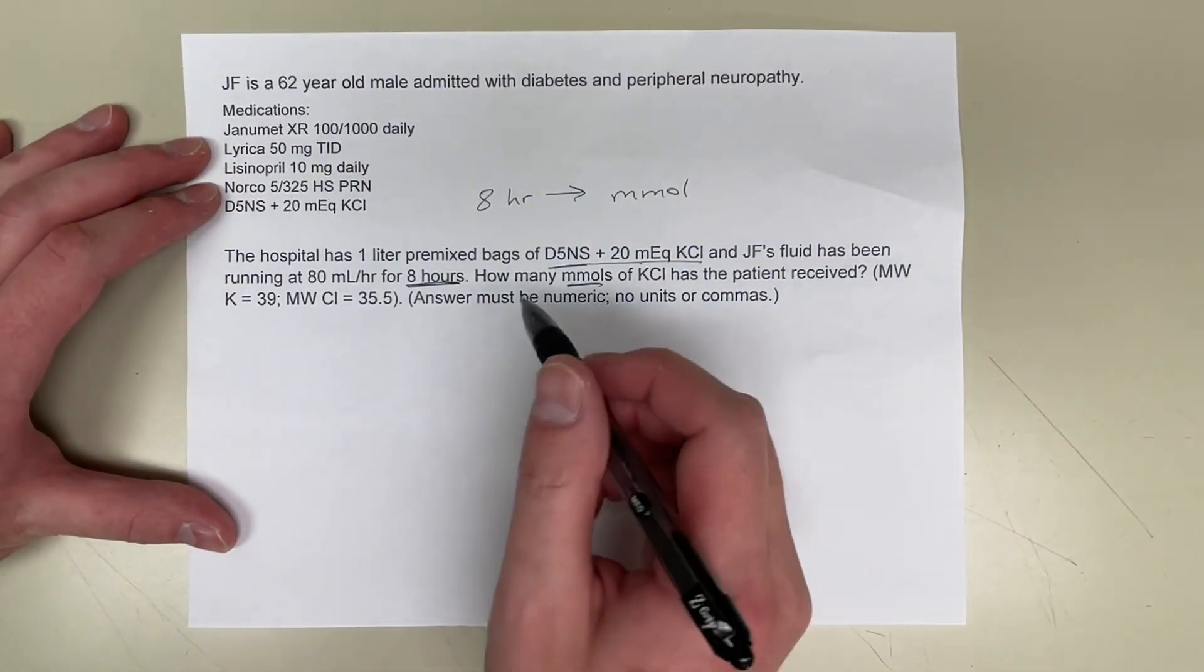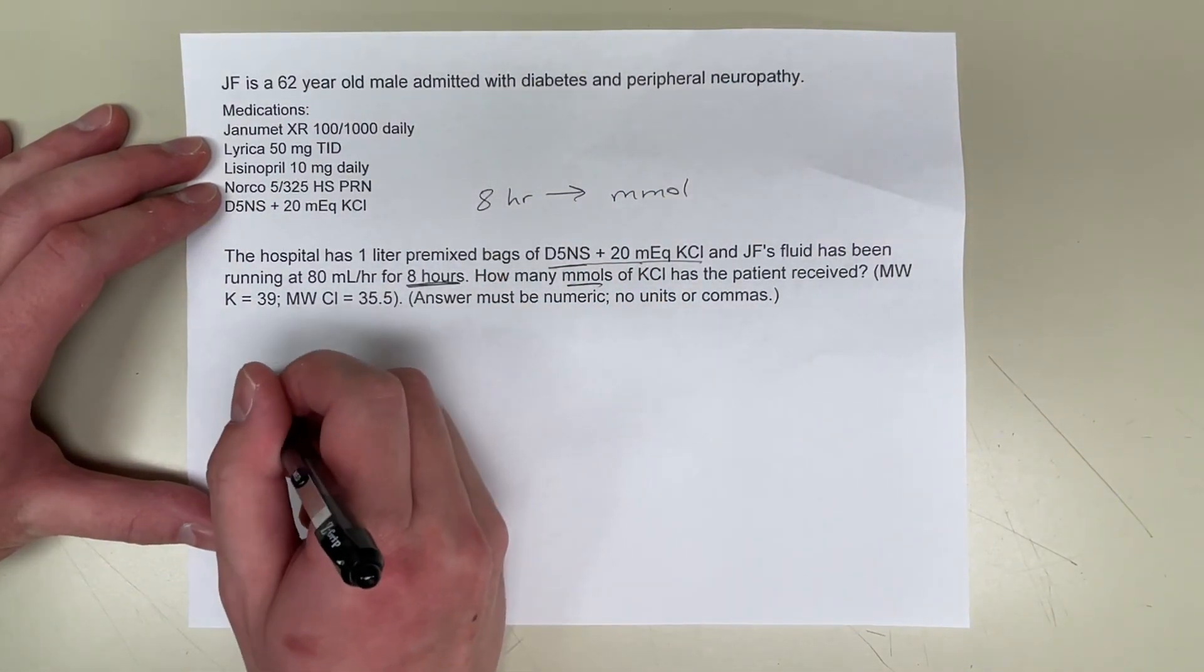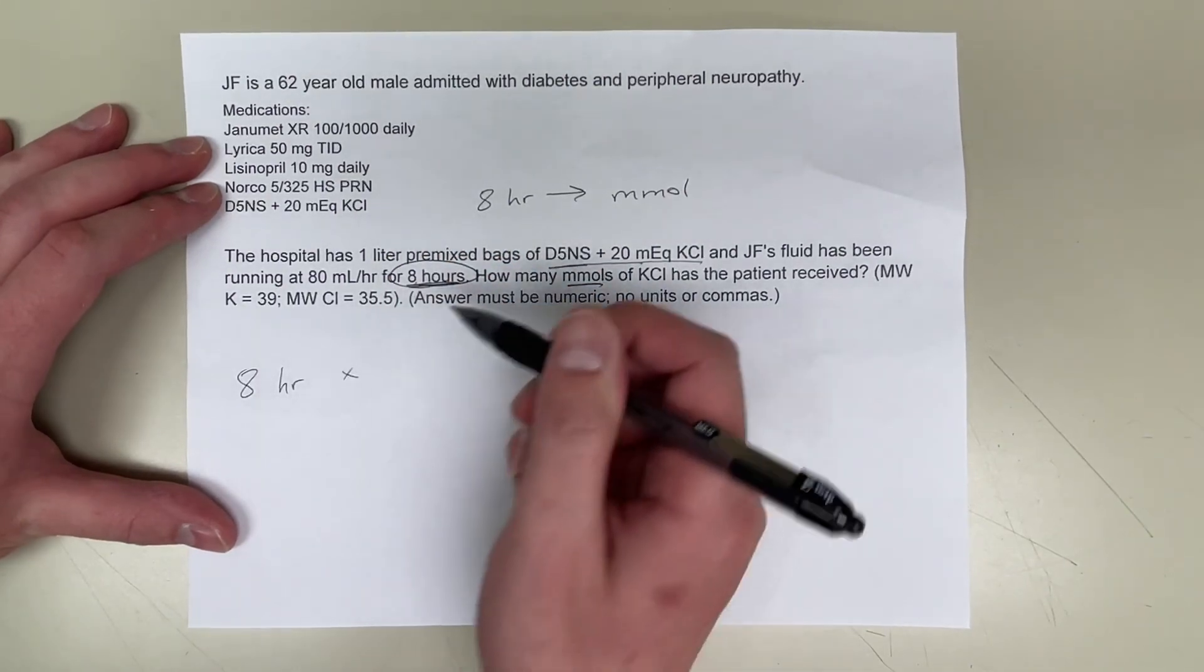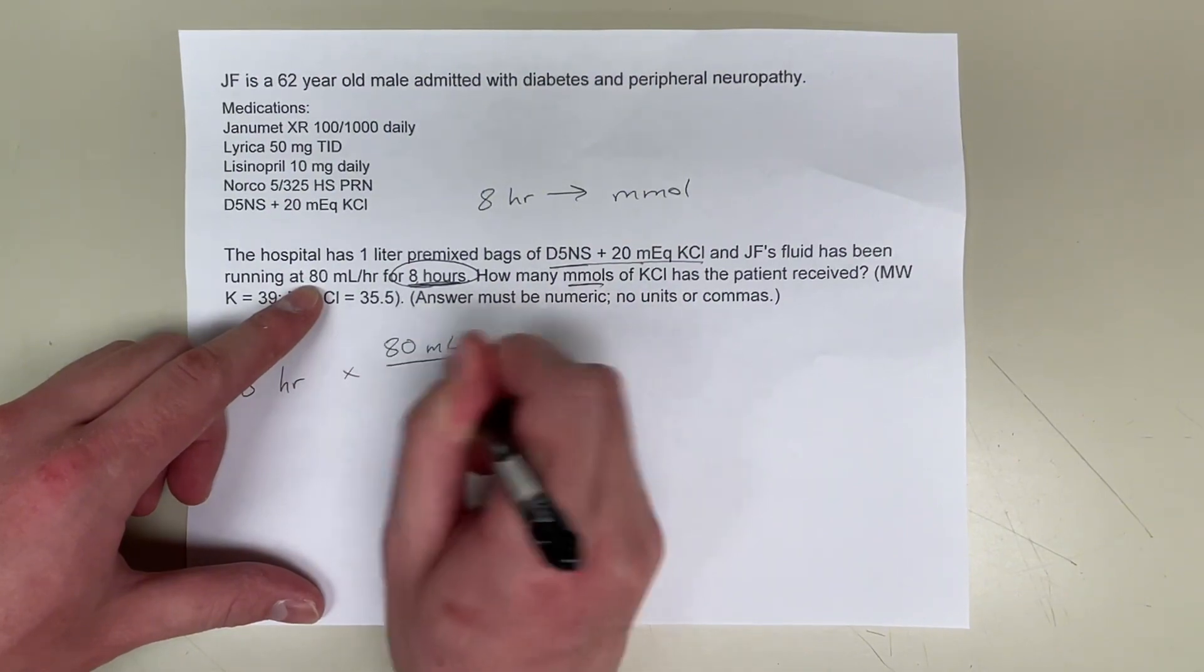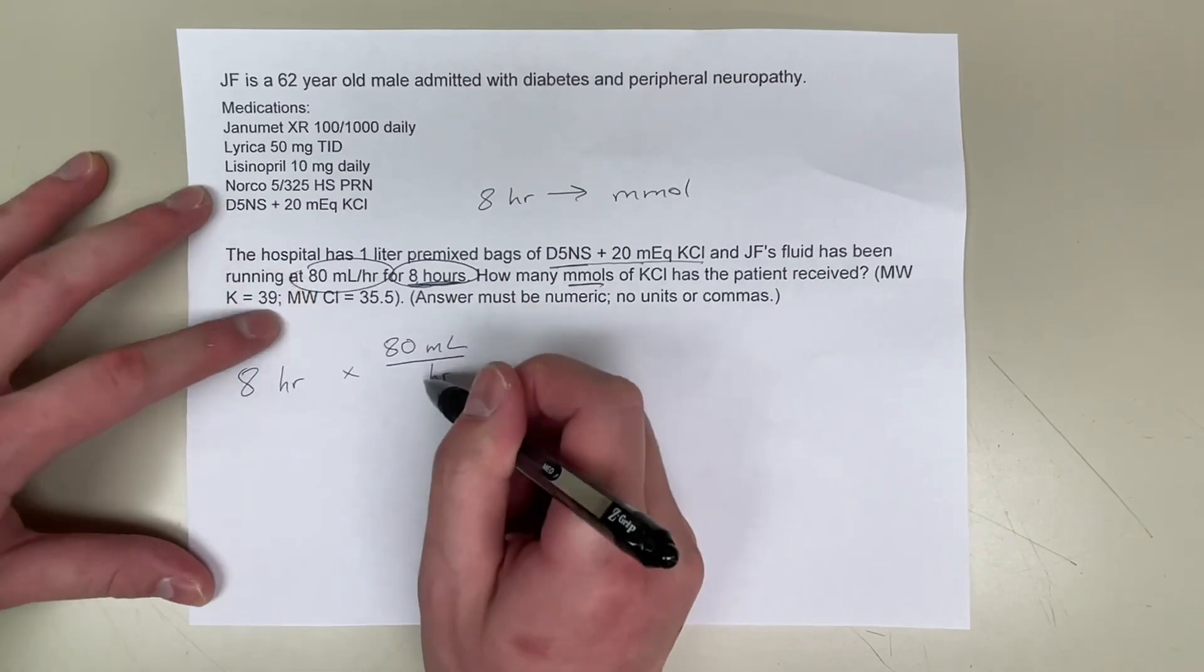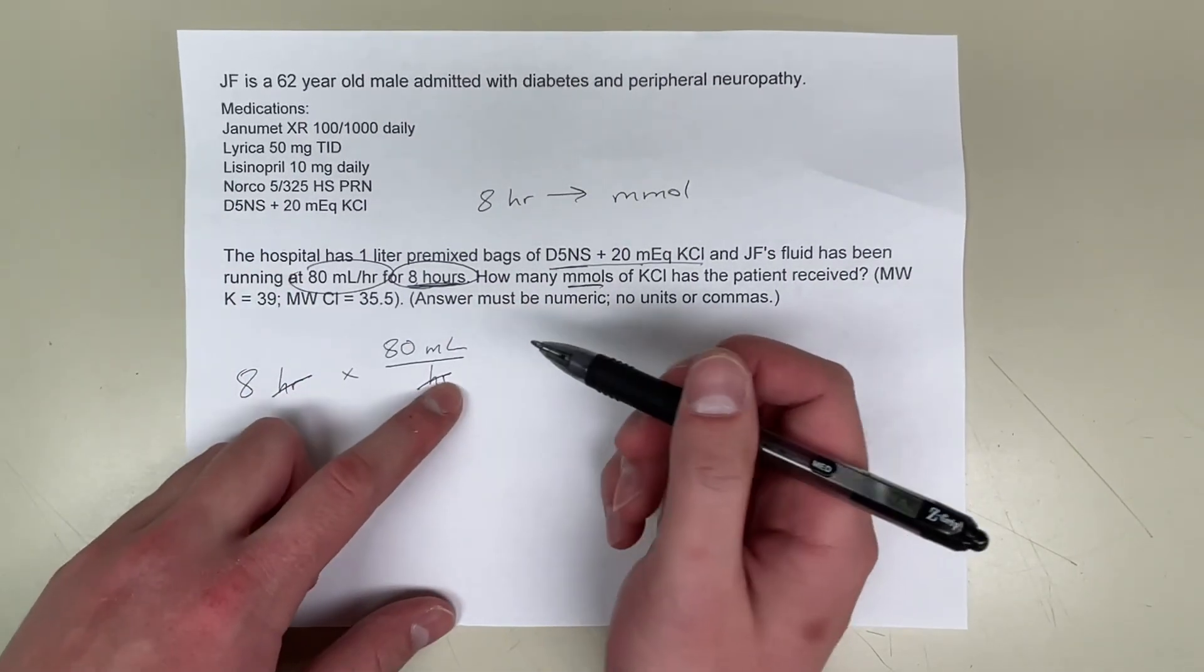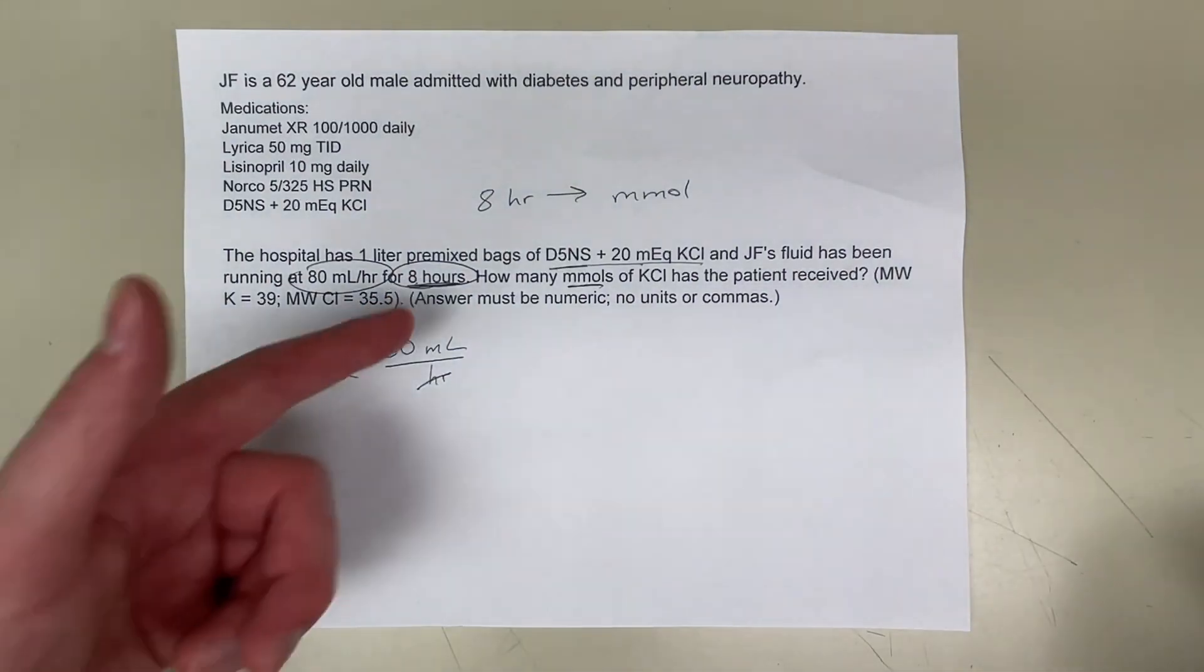The first thing we're going to do is calculate hours to milliliters. So start off with the 8 hours here, multiply that by our conversion here because the bag is running at 80 milliliters per hour. So I want hours here to cancel out hours here. This will find out how many milliliters of the bag has been infusing over the entire 8 hours.